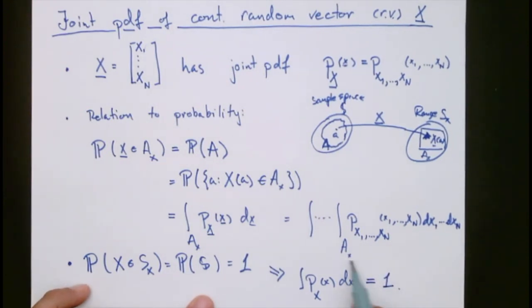So this is the same as in the scalar case where pdf always integrates to 1. This is the one thing we know about the pdf. The other thing is that px of x is always greater than or equal to 0.